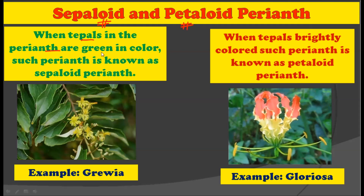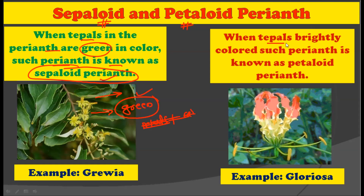Now let us see about sepaloid Perianth and petaloid Perianth. When the tepals in the Perianth are green in color, such a Perianth is called the sepaloid Perianth. When the tepals are brightly colored, such a Perianth is called the petaloid Perianth. The example for sepaloid Perianth is Grewia, and the example for petaloid Perianth is Gloriosa. You can clearly observe in Gloriosa there are brightly colored tepals, so it is called the petaloid Perianth.